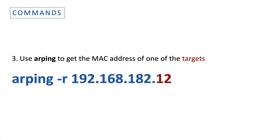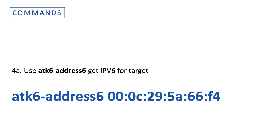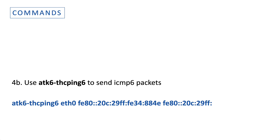Using the -R option in rping and one of the host's IP addresses, I can get the MAC address. Next, I would use that MAC address in the address6 tool to get the IPv6 address. THCPing6, which sends ICMPv6 packets, requires the interface name (eth0), the source IPv6 address (meaning our Kali machine), and the target IPv6 address.